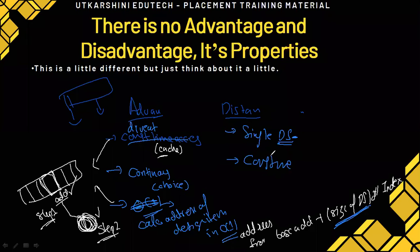Another listed disadvantage — and this is something I don't believe is true — is constant memory declaration: the idea that you can only have a fixed amount of memory, and you can't expand from n to n+1 or n+2. I don't agree this is a real restriction, and I'm not alone — a lot of people believe this is not actually a limitation.